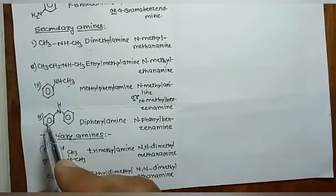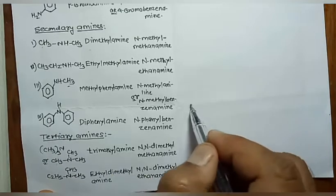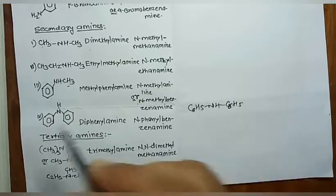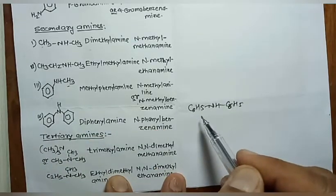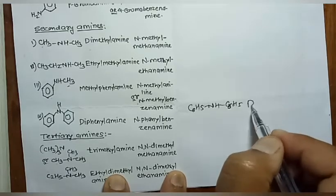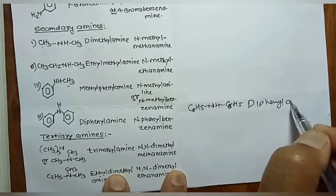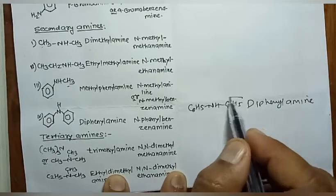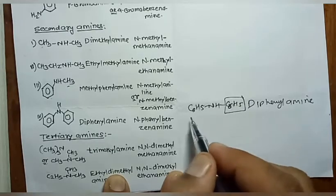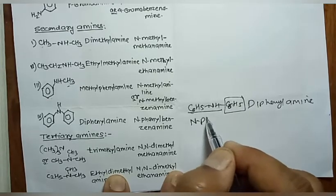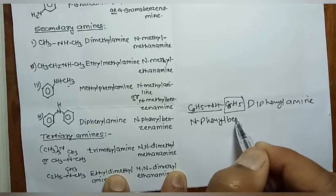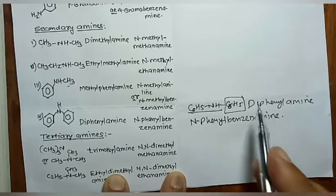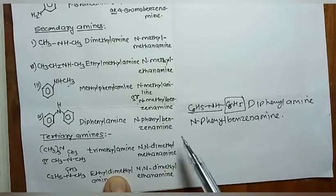C₆H₅NHC₆H₅ is diphenylamine — that is the common name. One phenyl is the parent benzenamine, and the other is the N-substituent, giving the IUPAC name 'N-phenylbenzenamine'.